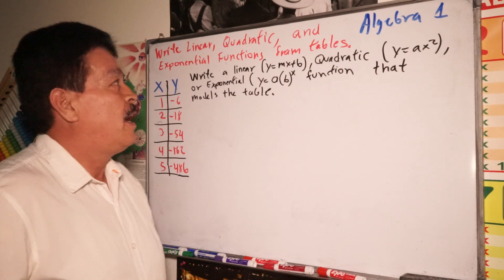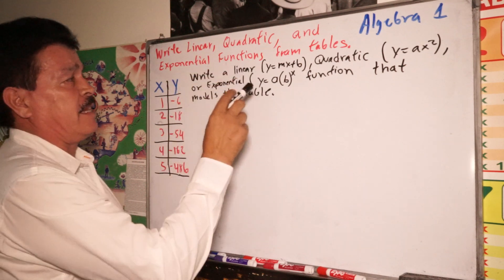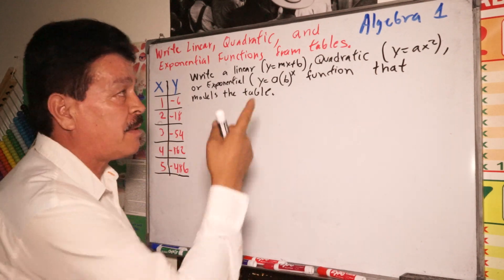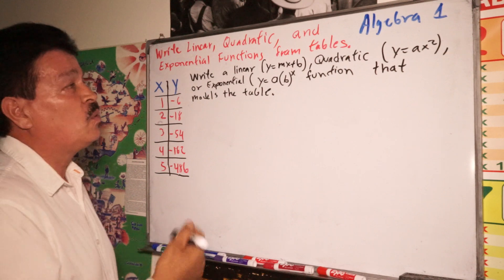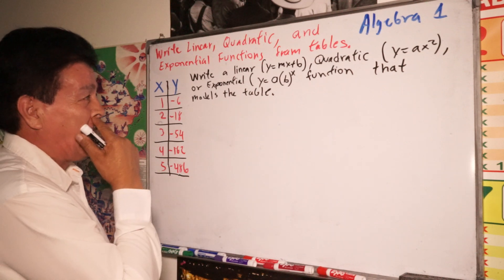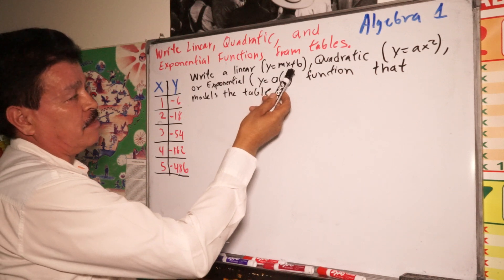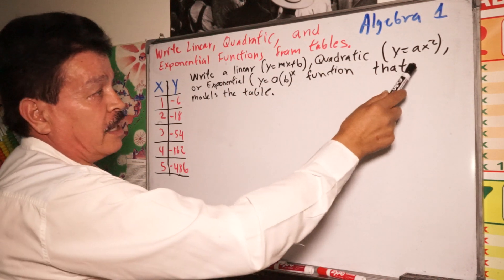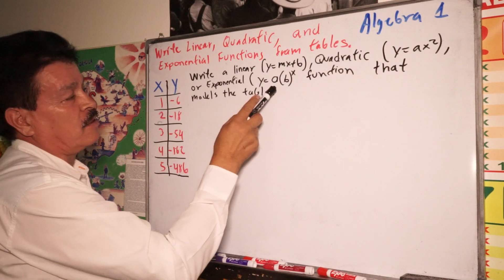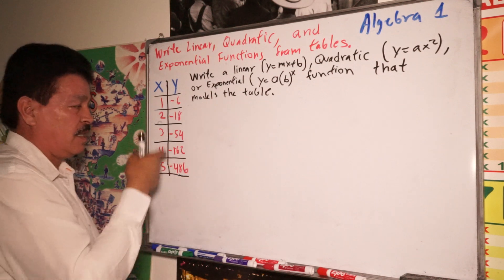Welcome to Algebra 1. Our topic for today is: write the linear, quadratic, and exponential function from tables. This is our topic for Algebra 1. This class is for high school Algebra 1. We have one problem here we have to solve: write a linear y equals mx plus b, or quadratic y equals ax squared, or exponential y equals a times b to the x power function that models this table.